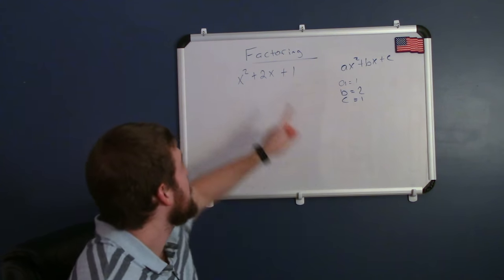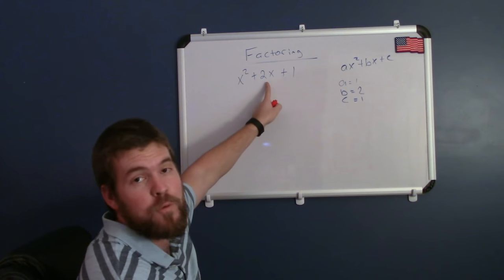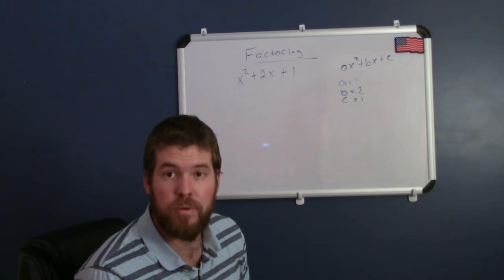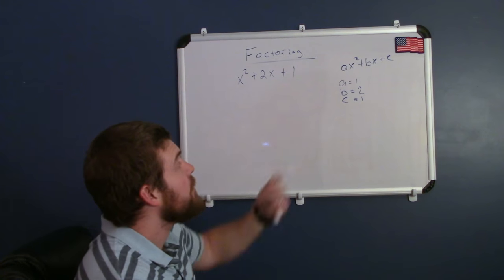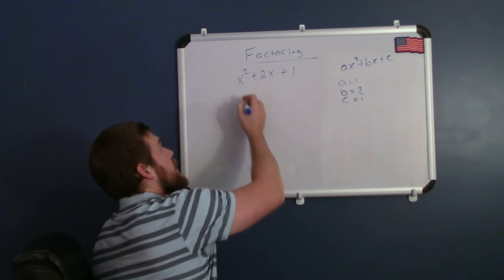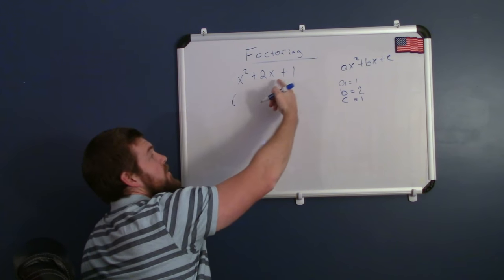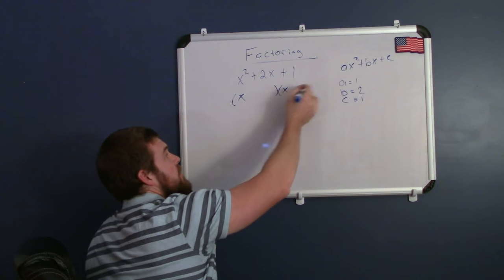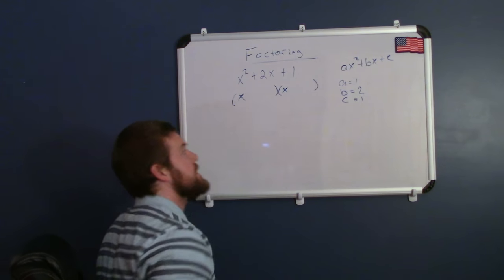a being the coefficient in front of x squared, b being the coefficient in front of x, and c being the last number there. This is a simple case with a being 1. We can separate x squared plus 2x plus 1 into two parentheses, starting out with x, that are multiplied together.